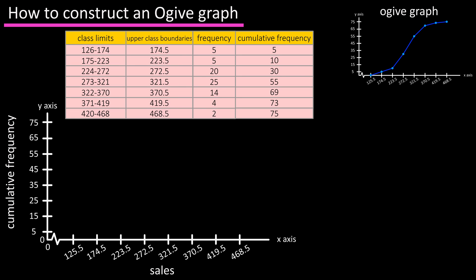Now we're ready to plot the points on our graph starting with the lower class boundary for class one, 125.5, which has a cumulative frequency or y value of zero.